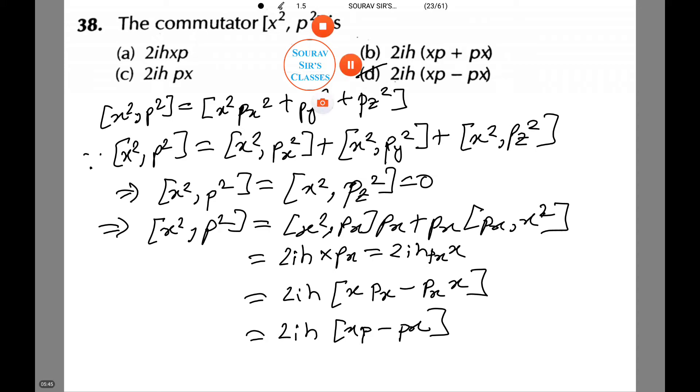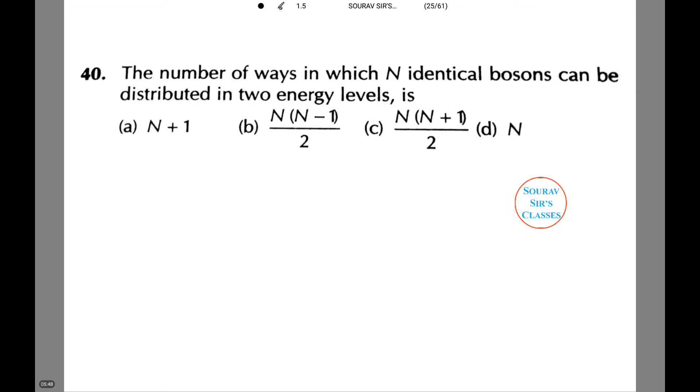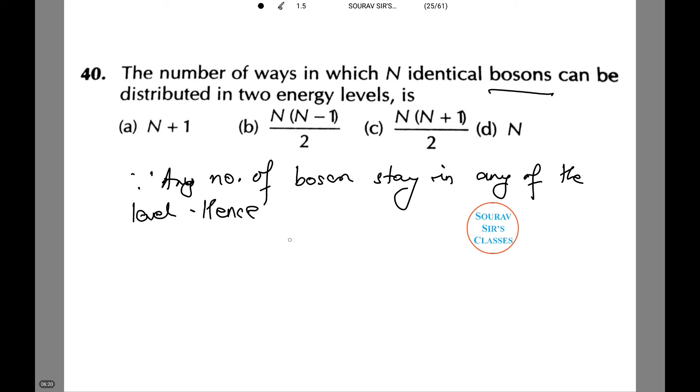Moving on to the next question. The number of ways in which N identical bosons can be distributed into two energy levels is among the following options. Since any number of bosons can stay in any of the levels, hence the possible number of ways are N(N+1)/2, which is option C.